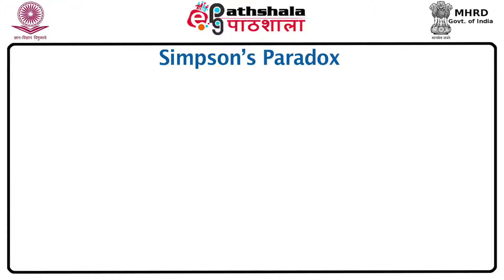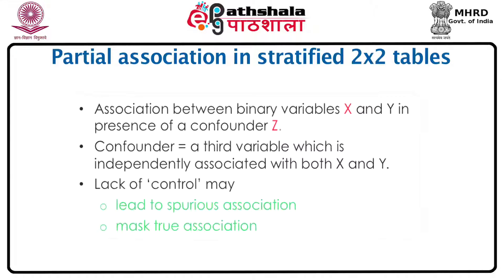In our introductory module, we had looked at an example on Simpson's paradox. This module is dedicated to Simpson's paradox and we shall revisit the death penalty example as well as look at some other examples, and in general the concept of marginal tables and conditional tables and how these might differ. Technically we are considering partial association in stratified 2x2 tables.